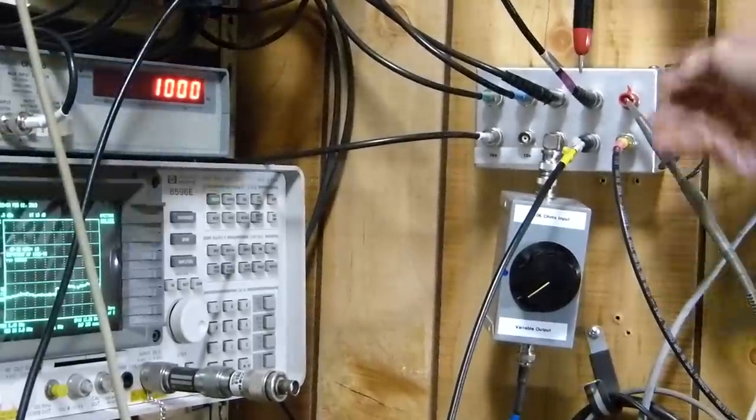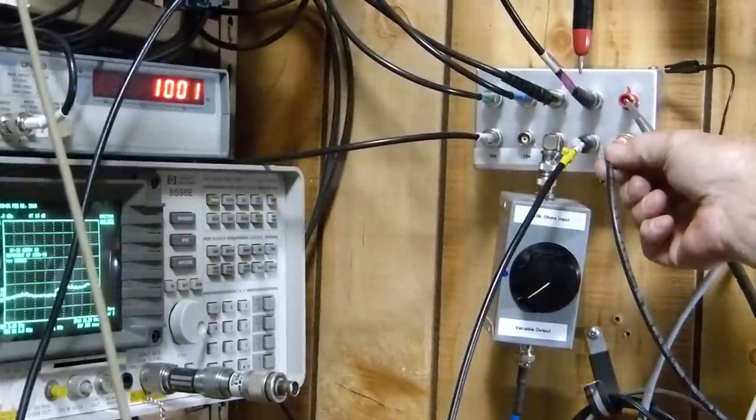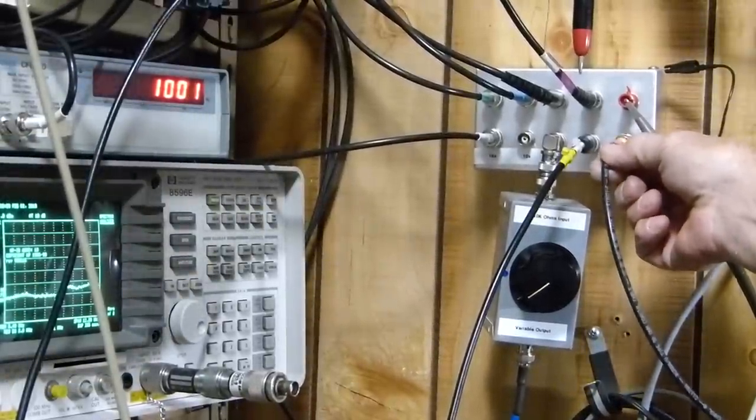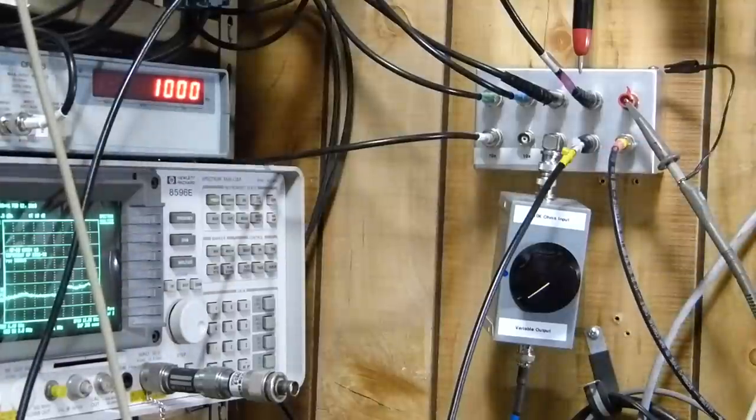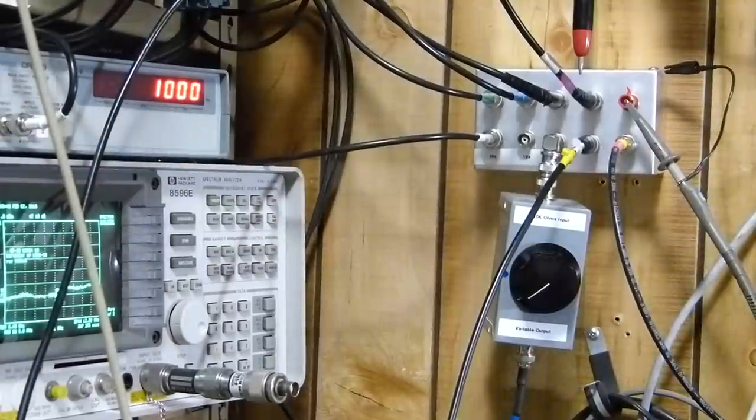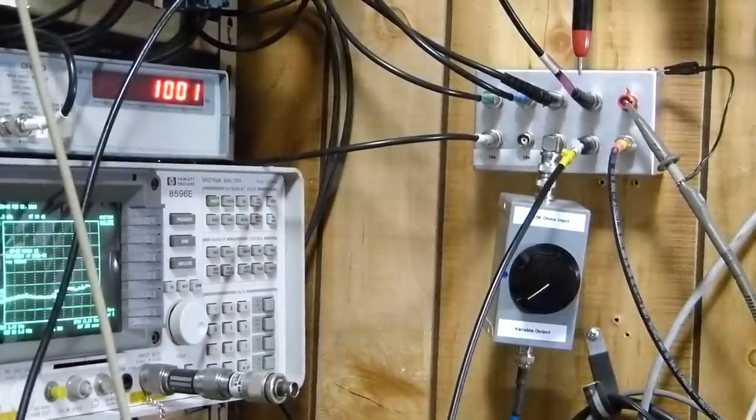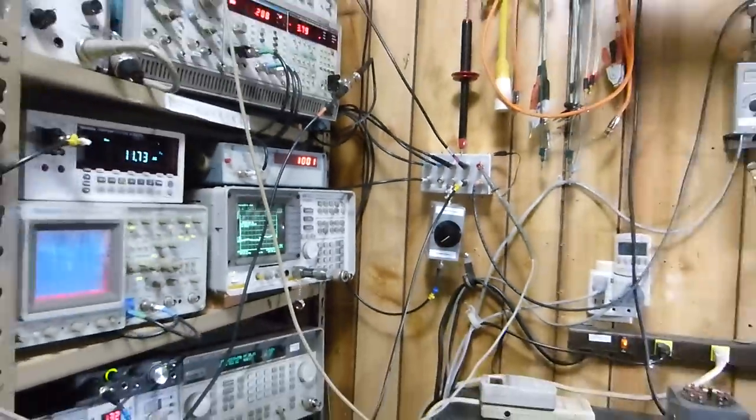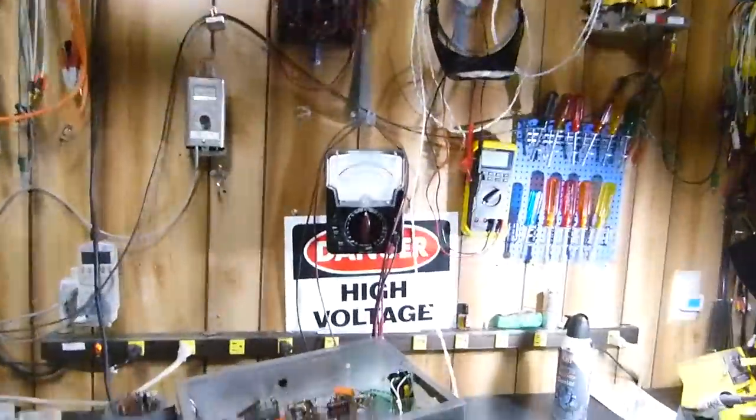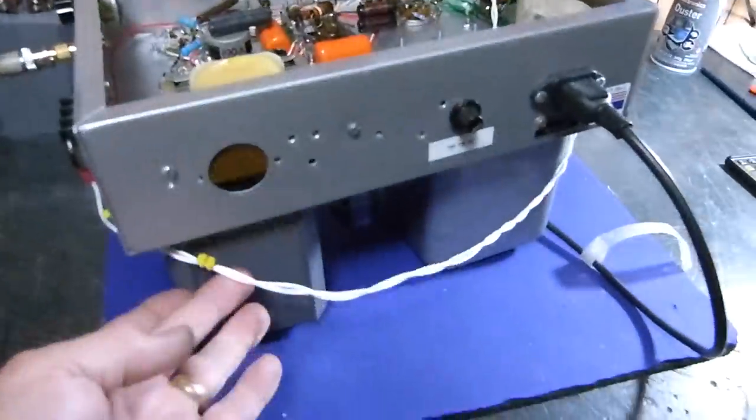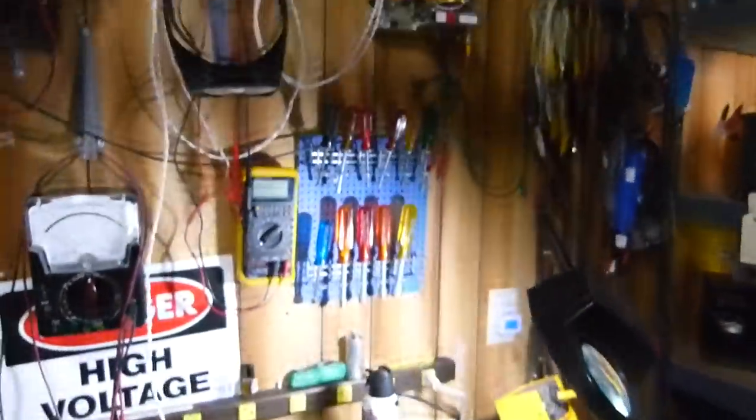This is coming straight from across the dummy load. The amplifier output is connected straight to - I've got to move the camera around here a little bit - the output of the amplifier right here is connected straight up there to those dummy loads.